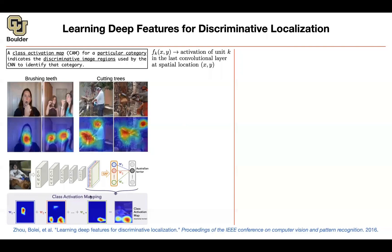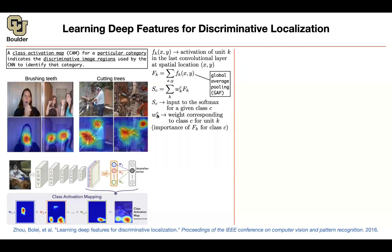Now the math: your feature maps are functions of pixel coordinates x and y, indexed by feature k (1 through n). Global average pooling averages over x and y to give you a scalar fk for each feature map. The prediction score sc for class c, before the softmax, is a linear combination of weights wkc multiplied by fk. Applying softmax to sc gives you the class probability.